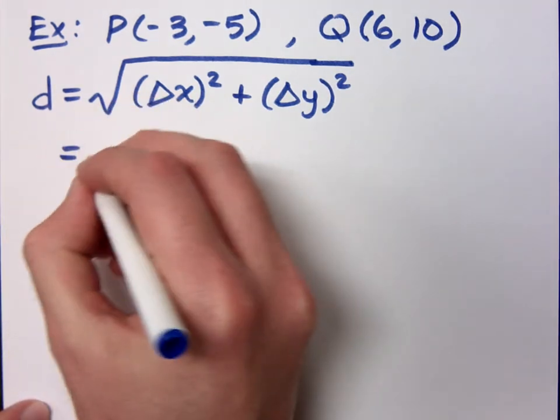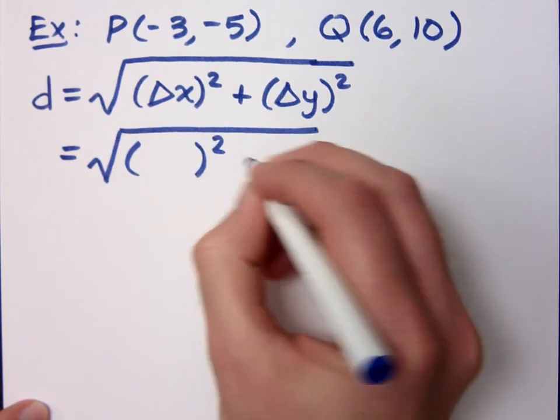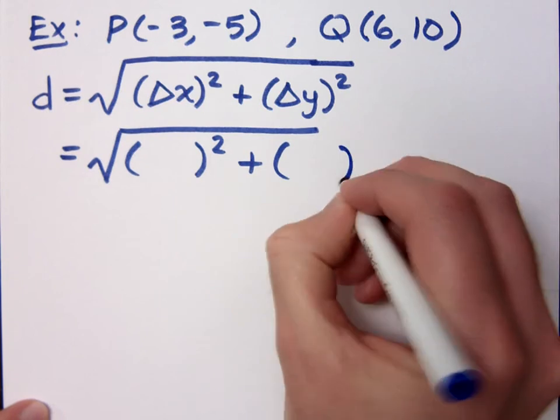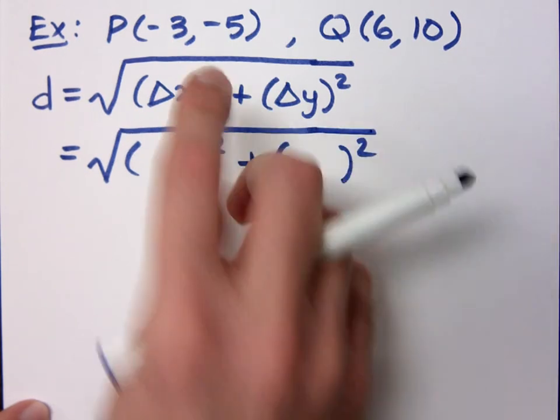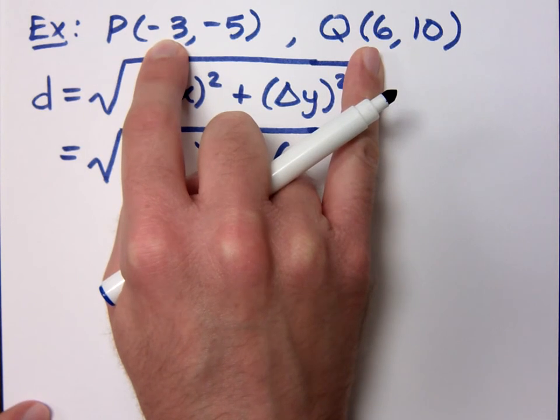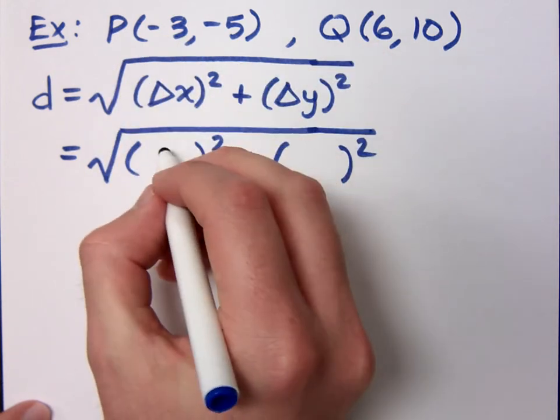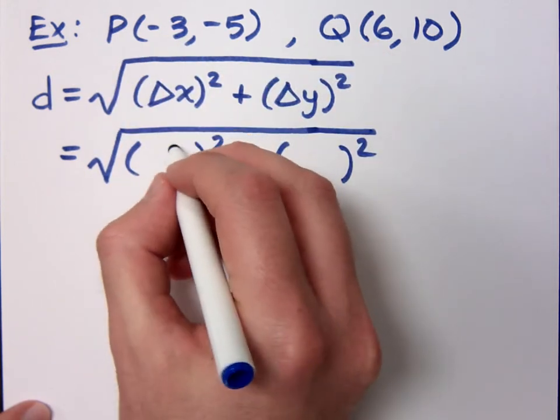So let's work this. What's the difference in my x's? From negative 3 to 6 is a change of 9 units.